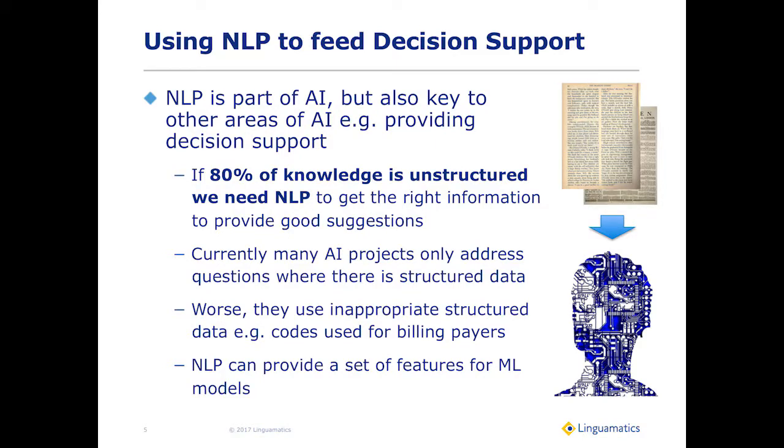A lot of AI projects are hampered because they only address projects where there's existing structured data. Worse, they'll use inappropriate structured data — for example, ICD-9 codes, which are billing codes — for research tasks where they're not really appropriate. We'll have a nice example of that later.